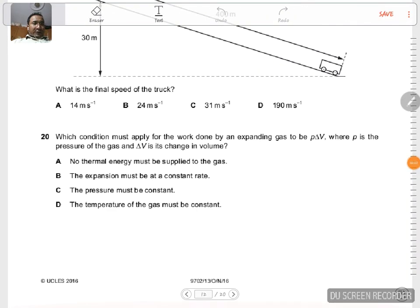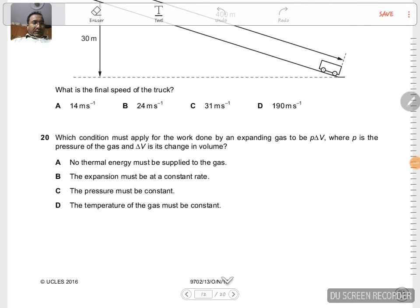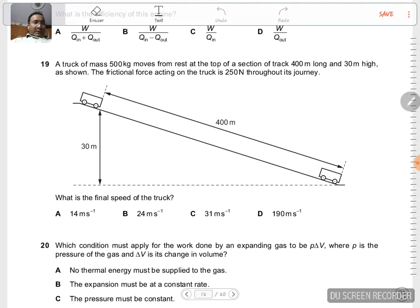This is question 19 from the 2016 October/November Paper 13. We have a truck of mass 500 kg at the top of a section of track which is 400 meters long. Its highest point is at a height of 30 meters. When the truck moves along this path, the frictional force acting on the body is 250 Newton. We have to find the final velocity of the truck when it reaches this point.